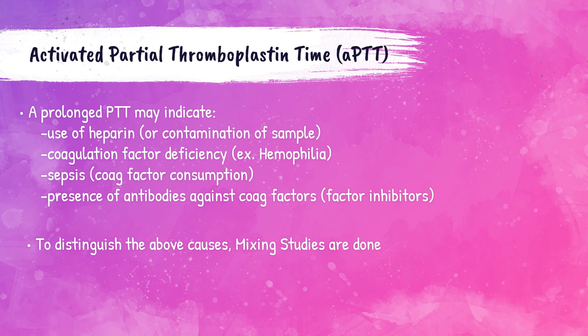If the patient's APTT is prolonged, this can mean a few different things. The sample may be contaminated with heparin, which can happen if drawn from a line that has heparin in it. The patient may have a coagulation factor deficiency. There may also be coagulation factor inhibitors, meaning the patient is not deficient in factors but the factors are being inhibited. Or the patient may be septic, since coagulation factors can be consumed in cases of sepsis. To distinguish between these causes, mixing studies are performed.